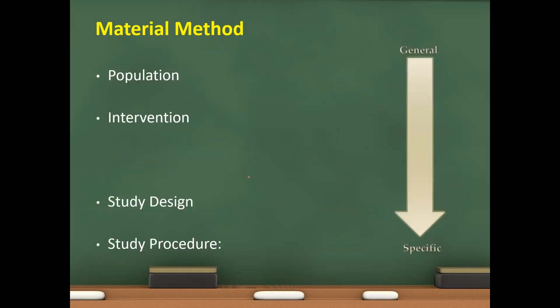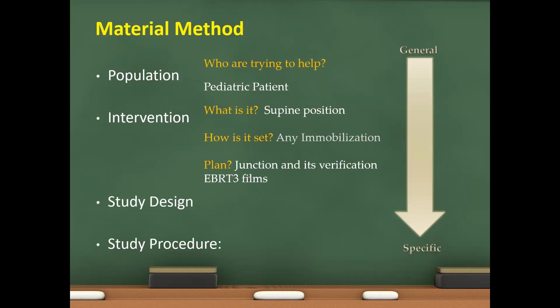So, material method. Population: who are trying to help, pediatric patient. Intervention: what it is, supine position. How is it set: immobilization plan, junction and its verification with EBT three plans. Study design: phase three study, randomized trial. Study procedure: explain the planning and verification method.